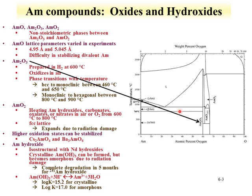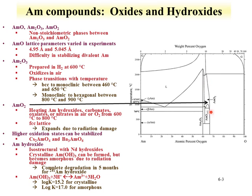From the phase diagram, one can see where the trivalent americium oxide species is preferentially formed as a function of the atomic percentage of oxygen. Americium dioxide is preferentially formed and can be produced by heating americium compounds in air or oxygen from 600 to 800 degrees. The main structure is face-centered cubic, which can expand due to radiation damage. The formation phase is shown in the phase diagram of americium with oxygen.